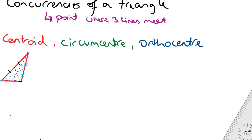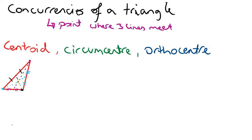The centroid is the point at which three medians meet. A median is a line that joins the vertex — which is the corner of a triangle — to the midpoint of the opposite side. So this point here is my centroid.